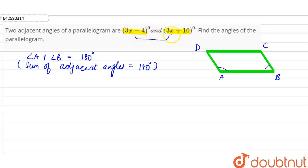So adjacent angles are given to us which are (3x - 4) and (3x + 10), which is equal to 180 degrees. So we can say 3x plus 3x is 6x, minus 4 plus 10 is plus 6, which is equal to 180 degrees.